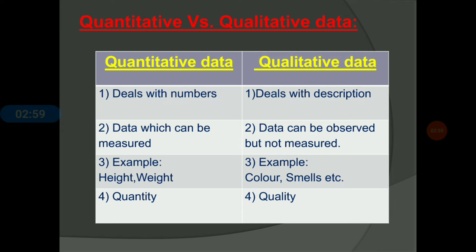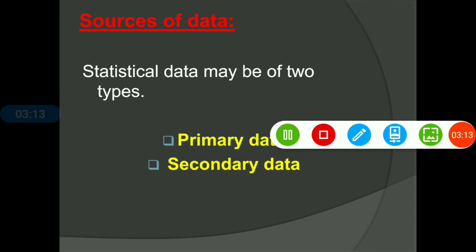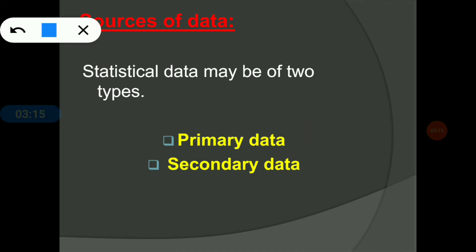Now let's move to the slide for sources of data. Statistical data may be of two types: the first one is primary data and the second one is secondary data. Both types of data will be discussed in the next slide.